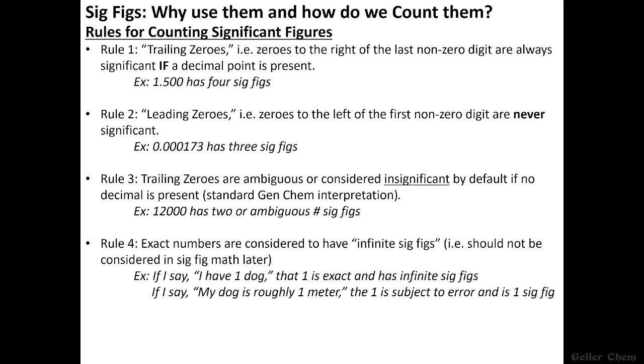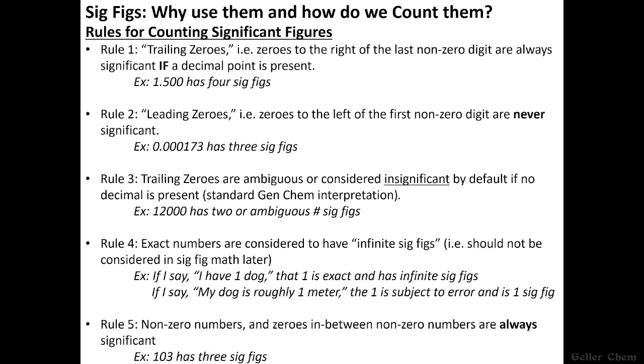From here, there's only one more rule to cover and I think it's the simplest. It's that non-zero numbers and any zeros in between those numbers are always significant. So a number like 103, well that has 3 significant figures. I include this at the end because I think it's the easiest and simplest one to remember and understand. So those are the rules for counting significant figures and also the logic behind why those rules exist.